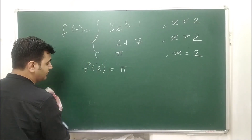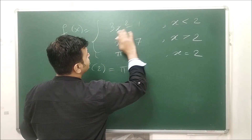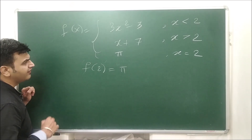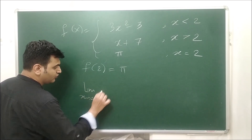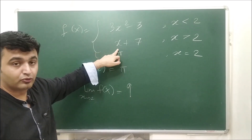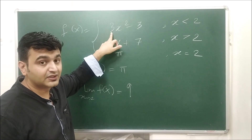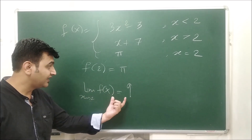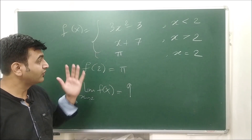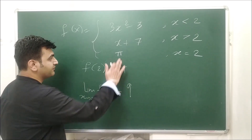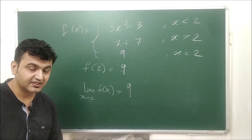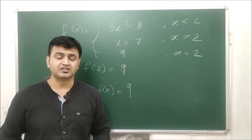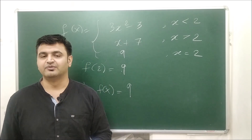To make a continuous example, let's modify the piecewise function. Suppose the first piece is 3x² − 3 for x < 2. Then the left-hand limit at 2 is 3(4) − 3 = 9, and the right-hand limit is 2 + 7 = 9. Both limits are equal so the limit exists and equals 9. If we also set f(2) = 9, then the limiting value equals the actual value of the function, so the function is now continuous at x = 2. You must check each condition one by one — if any condition fails, the function is not continuous.